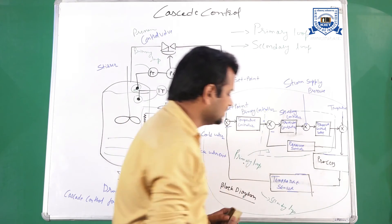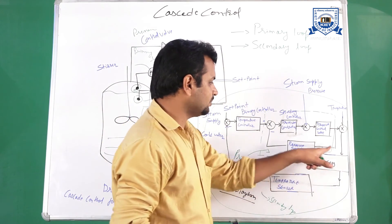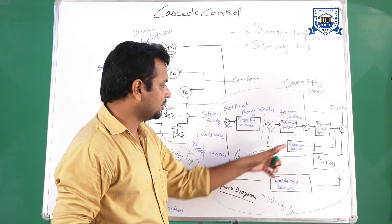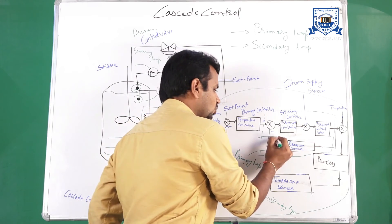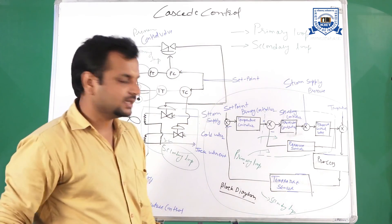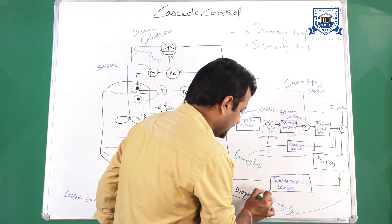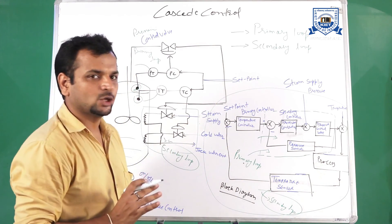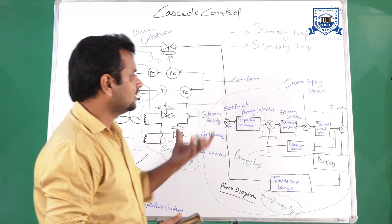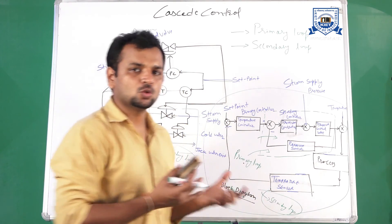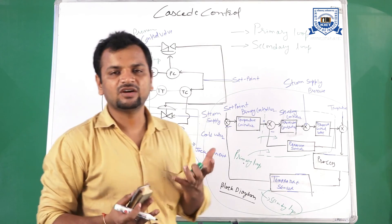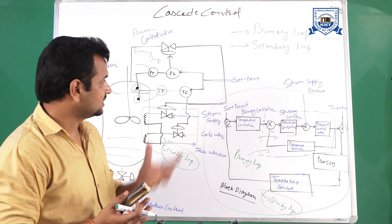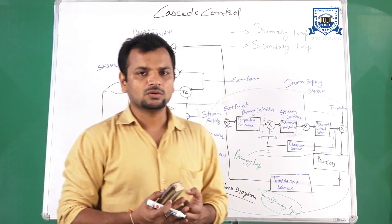In this block diagram you can see the process, and for the process we are measuring both the pressure and the temperature. Pressure is controlled by the primary loop and temperature is controlled by the secondary loop. So this is all about cascade control — by classifying the whole control process into two groups, one primary loop and one secondary loop, it makes the controller easy. This is all about cascade control. Thank you.